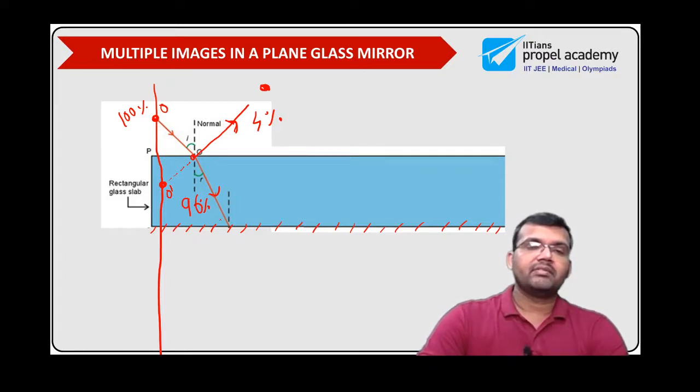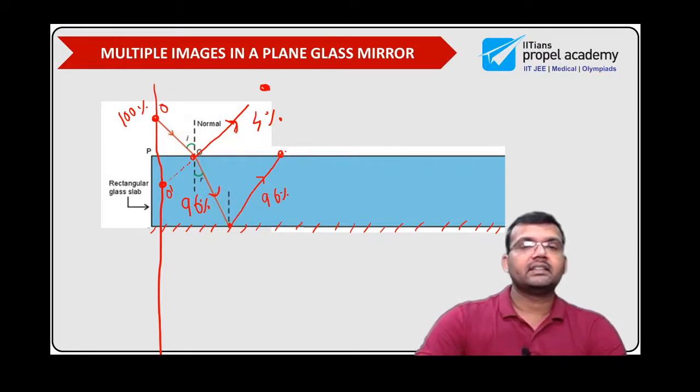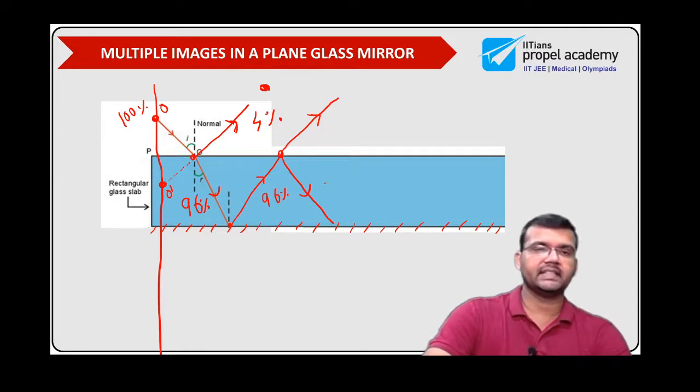Now from the refracted light ray, as we have painted with silver color, it will suffer reflection. So entire 96% of the light ray will reflect back. So again on this surface, you will have refraction and reflection once again.